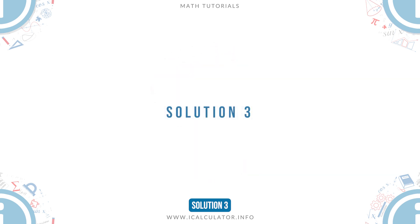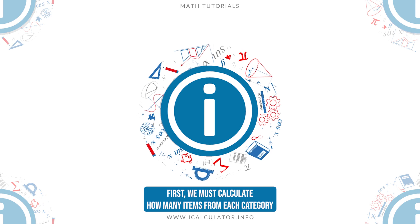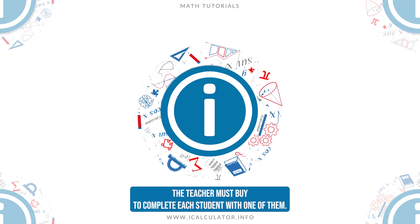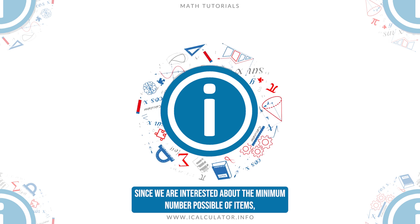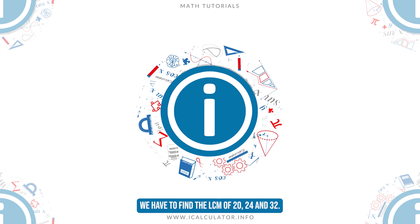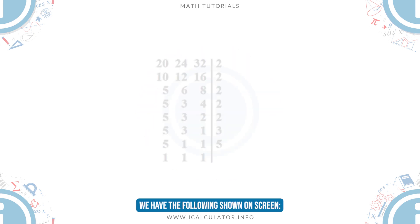Solution 3. First, we must calculate how many items from each category the teacher must buy to complete each student with one of them. Since we are interested about the minimum number possible of items, we have to find the LCM of 20, 24, and 32. We have the following shown on screen.